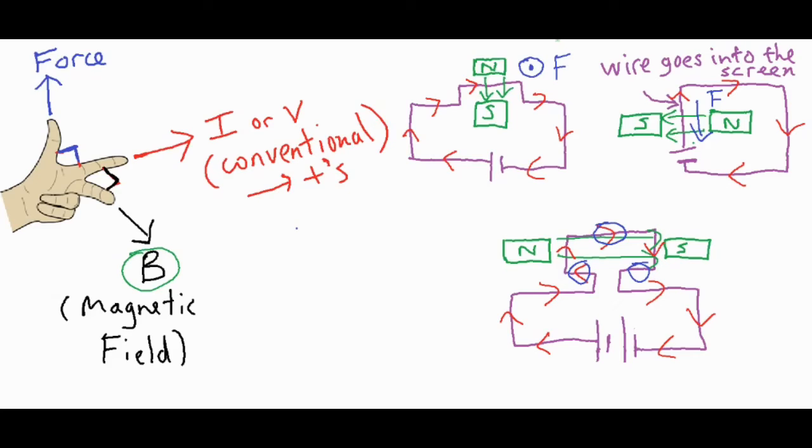So we want to focus on this portion of it that's going up and this portion of it that's going down. So with that being said, keeping my middle finger pointed to the right and then directing my pointer finger up, then my thumb is going out of the page on this side, or out of the screen.